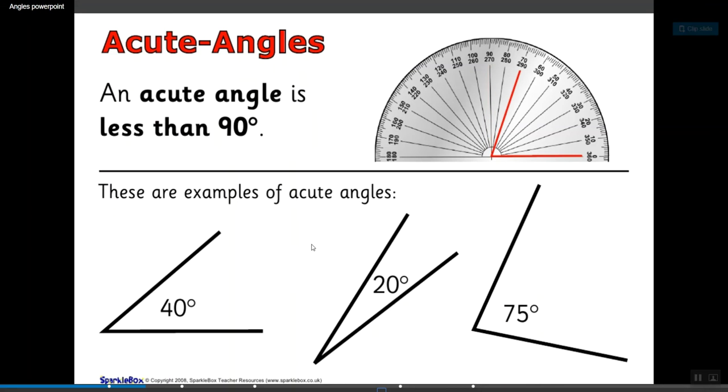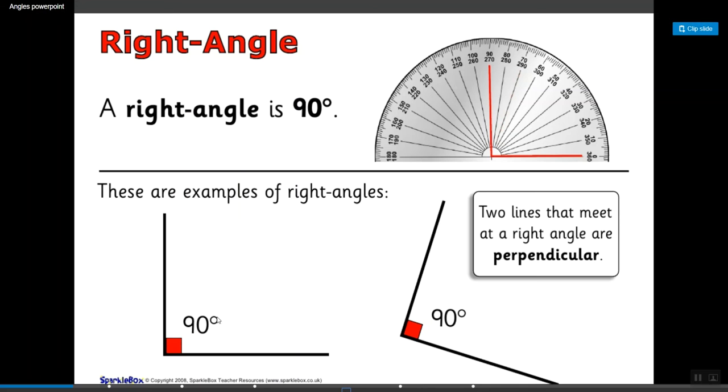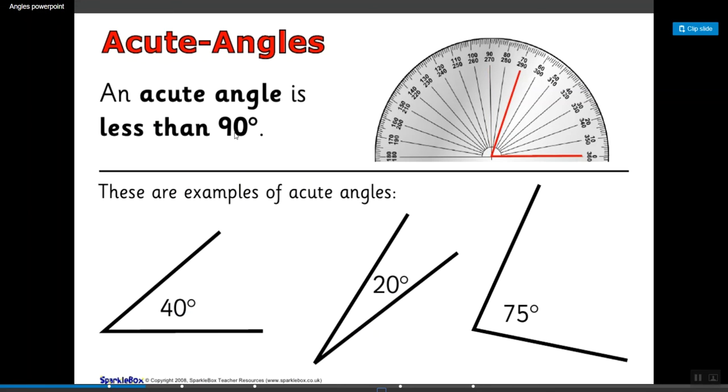Okay, next one are acute angles. Acute angles are less than 90 degrees, so we remember right angles are exactly 90 degrees. Acute angles are anything less than 90 degrees. So here on our protractor we have 0 and 70, that 70 is less than 90 so we know that this angle is acute. 40 degrees, that is less than 90 so it's acute. 20 degrees is less than 90 degrees so it's acute. 75 degrees is less than 90 degrees so we know that it's acute.